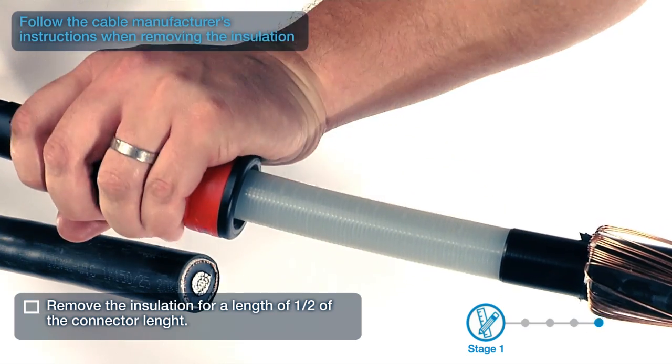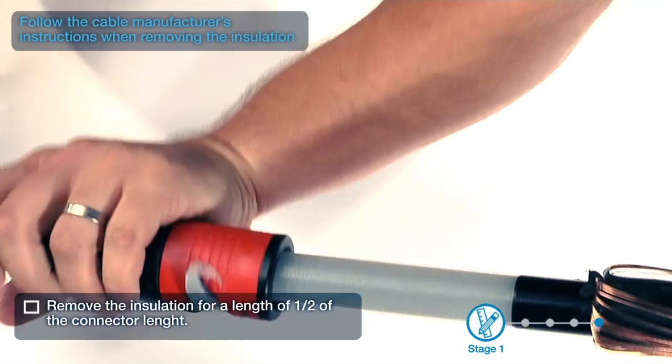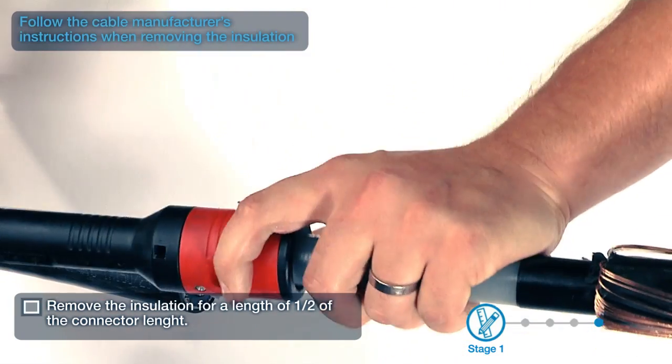Remove the insulation for a length of half of the connector length. Follow the cable manufacturer's instructions when removing the insulation.